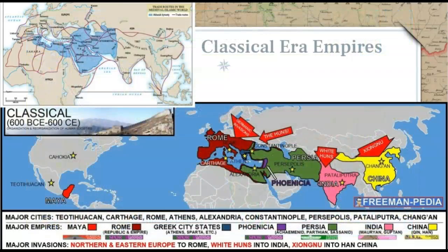Chinese goods from the Classical Era have been found as far as the Roman Empire and vice versa. Our second map is from the beloved AP World History resource, Freemanpedia — link in the notes. You can see some of the major empires of this time. We'll talk about India, China, Persia, Greece, Rome, Mesoamerica, and South America, but not in that order. And that's a lot of ground to cover, so let's get started.